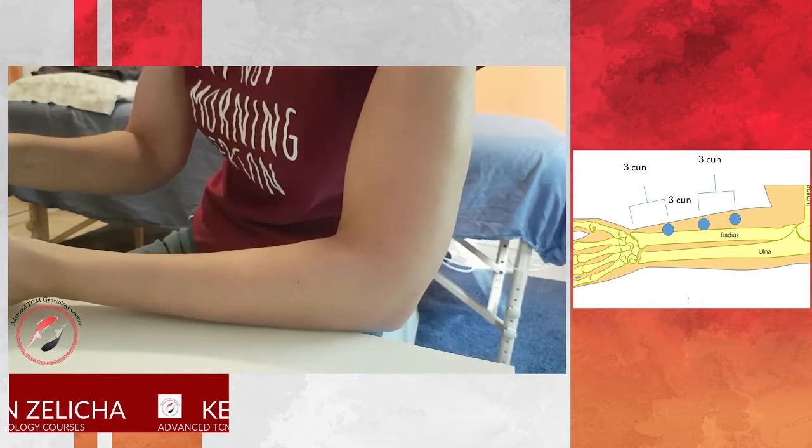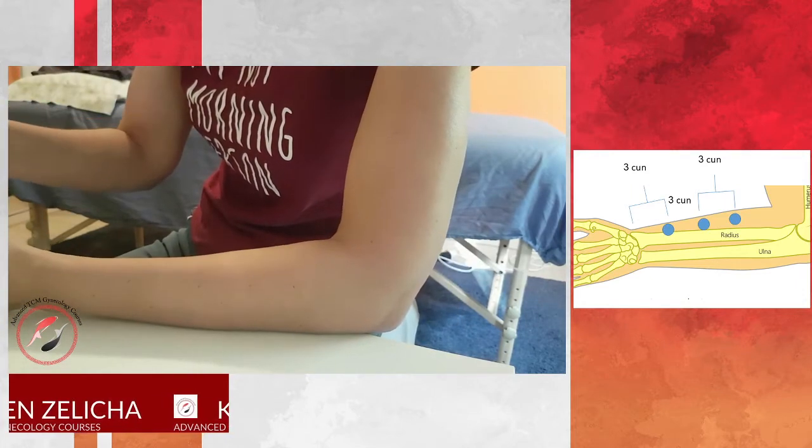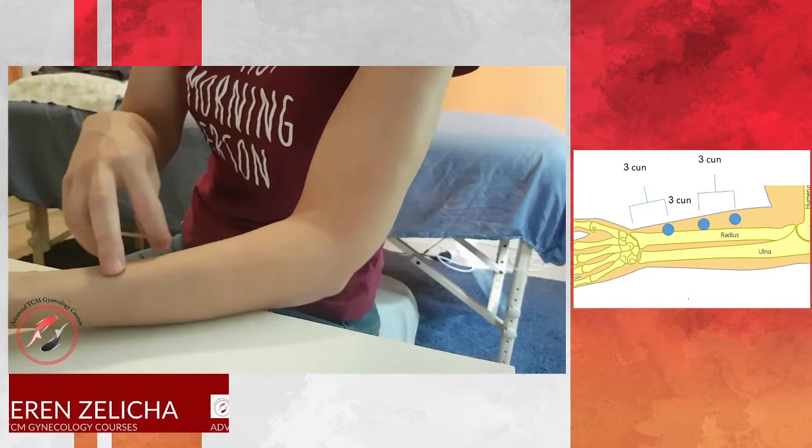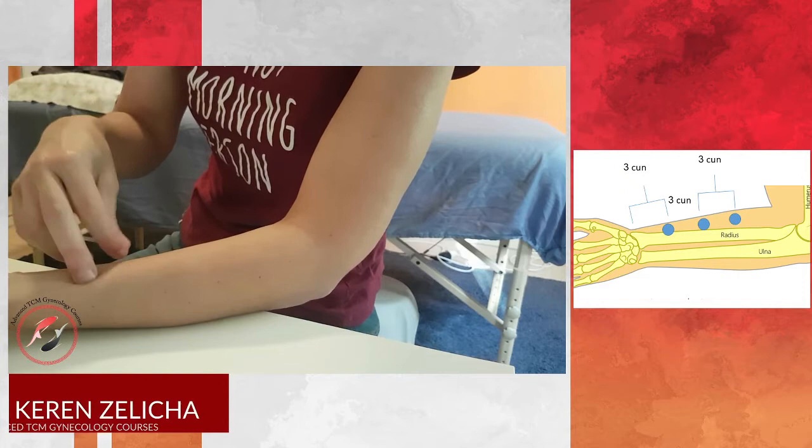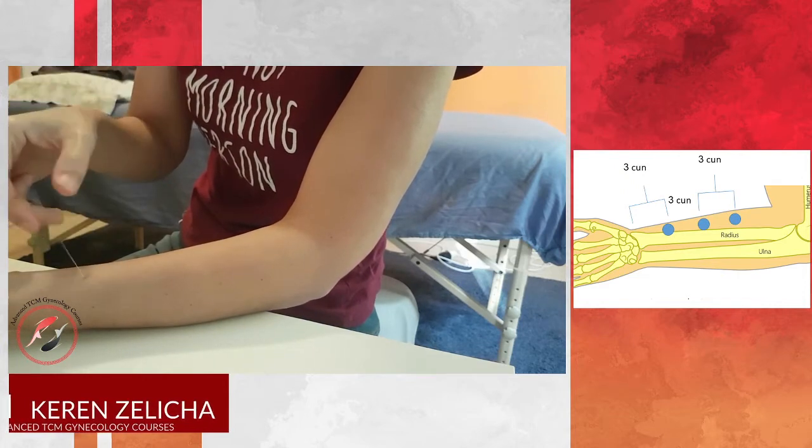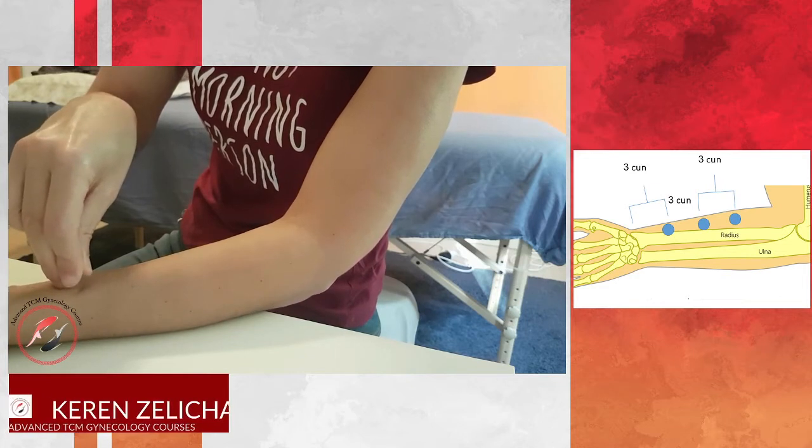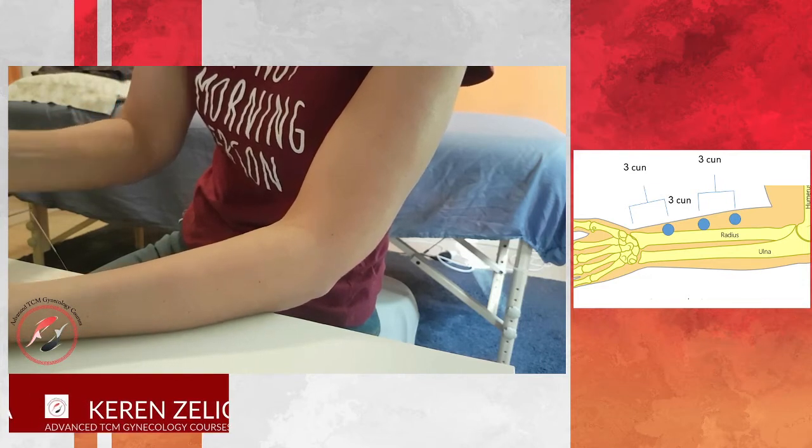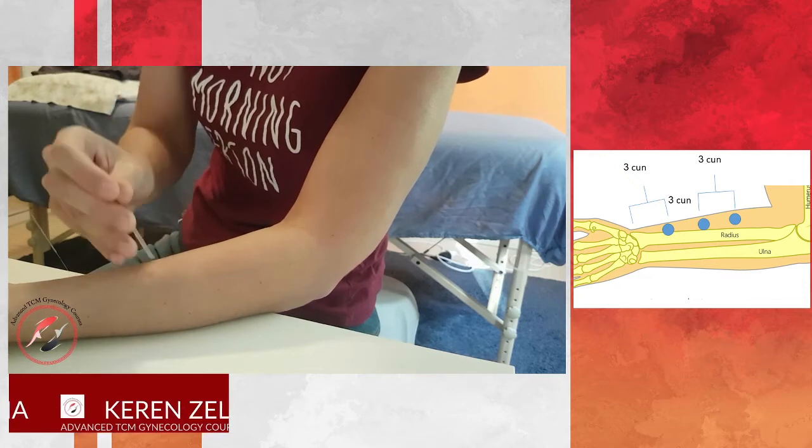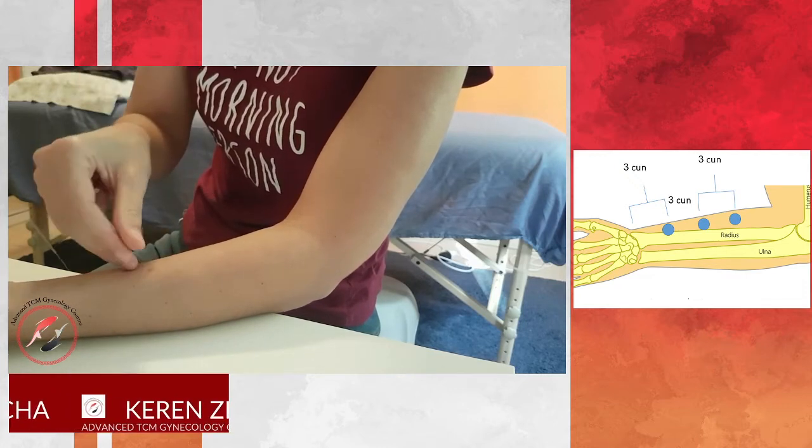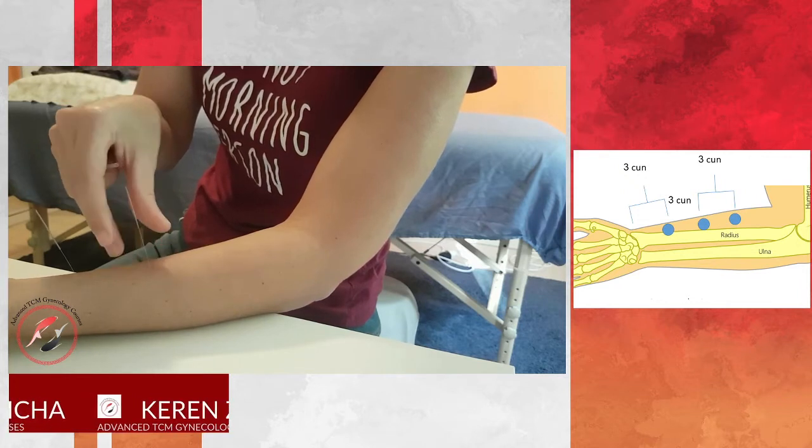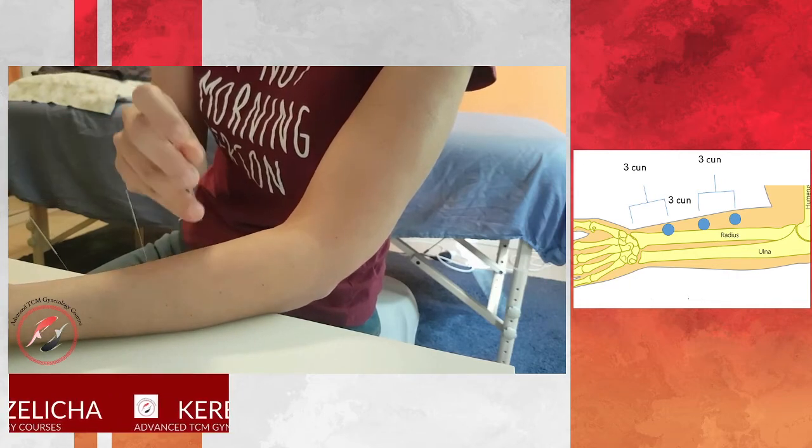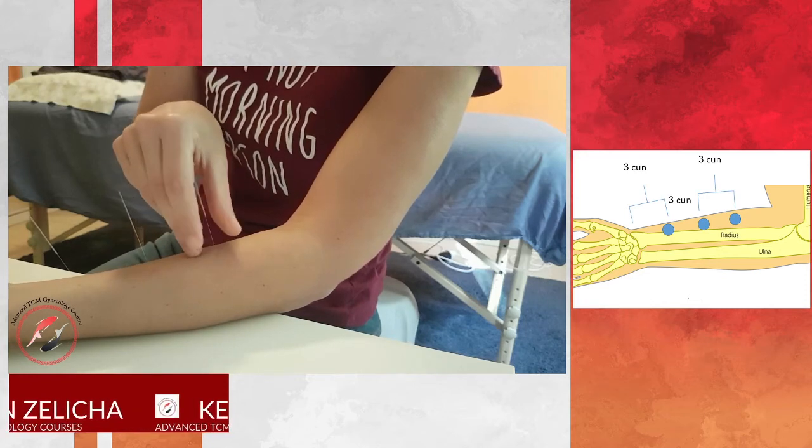How do we puncture those points? So as I said, I use 3 tsun, 6 tsun, and 9 tsun above lung 9. So I use the lung meridian and I look and I puncture 90 degrees, 3 tsun. And the other one would be about 6 tsun above lung 9, and the proximal one would be 9 tsun above lung 9.